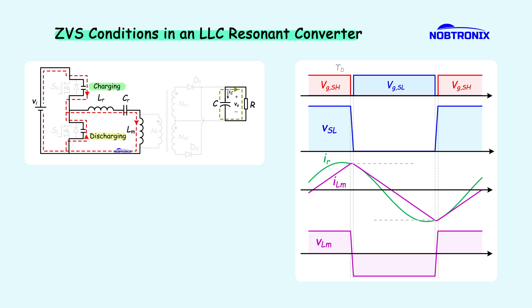To figure out the ZVS conditions, we can make the circuit a bit simpler. Since the MOSFETs are off during the time, we can just focus on their output capacitors. We'll replace the resonant tank with a current source that's equal to the maximum magnetizing current.